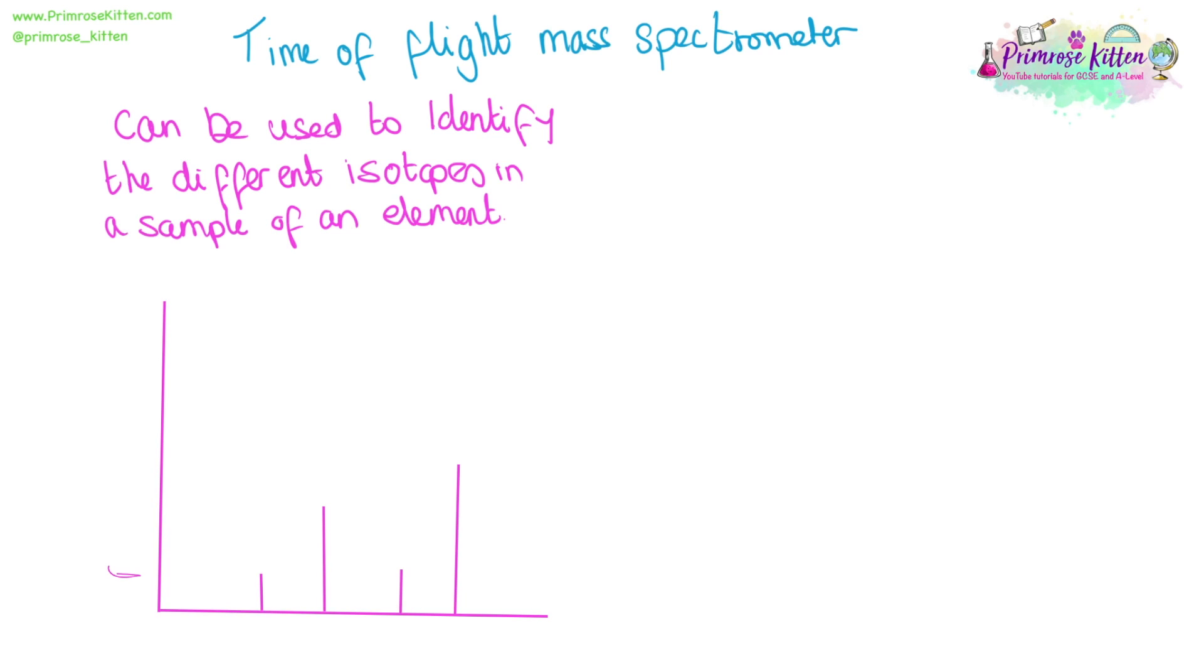Here we have a typical type of graph that we might get at the end. Up the side here, we're going to have relative abundance and this is a percentage, so remember, all of the individual abundances will add up to 100. Along the bottom, we are going to get the M/Z, or the mass charge ratio. So the number that you're going to see associated with each of these peaks is going to be the mass.